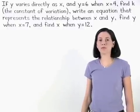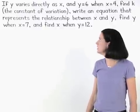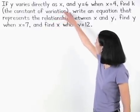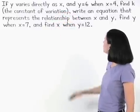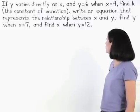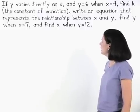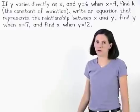Let's start with the first part of the problem. If y varies directly as x and y equals 6 when x equals 4, find k, the constant of variation.